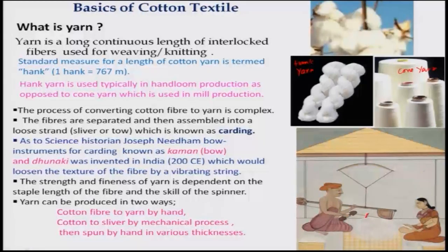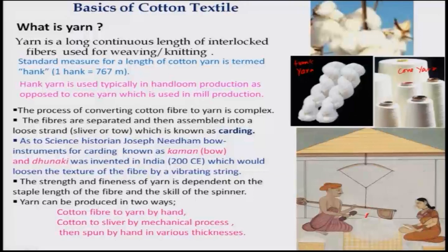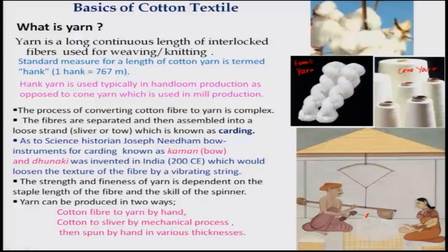The strength and fineness of yarn is generally dependent on the staple length of the fiber and the skill of the spinner. Yarn can be produced in two ways — one is by hand, which was used in our country in earlier days and even today. Nowadays machines are also used — the mechanical process converts cotton to sliver and then it is spun by hand in various thicknesses, which is used today even in the hand loom sector. In the mill sector, a machine does this, consuming a lot of energy, whereas the hand method uses no energy and is good for physical exercise.